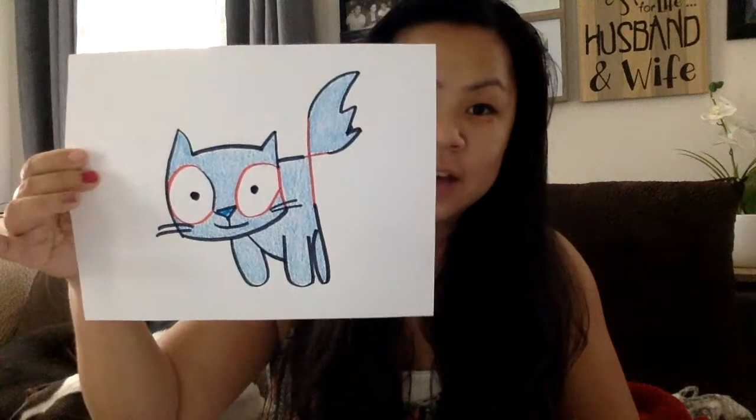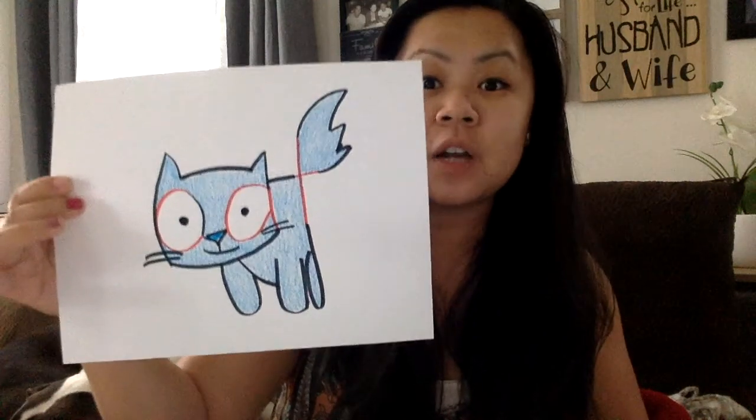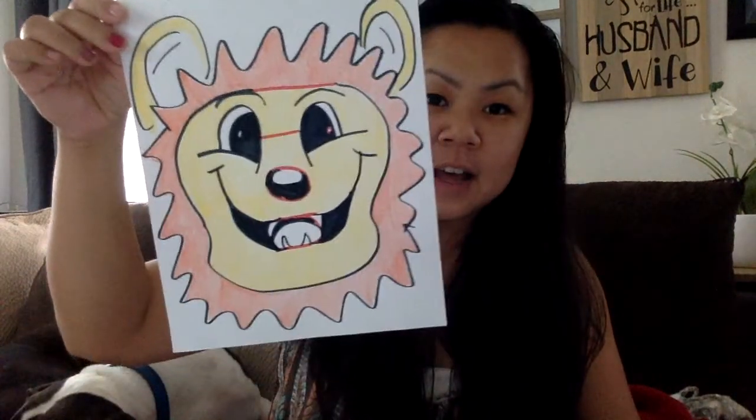So here we have cat. You can see in red it has the word cat in it. And we're going to learn how to draw this animal. So we have also dog, fish,